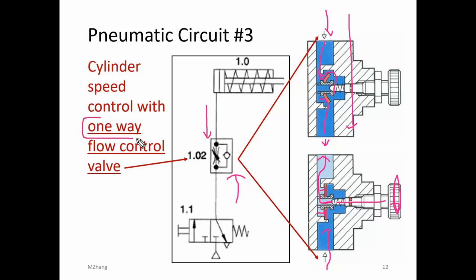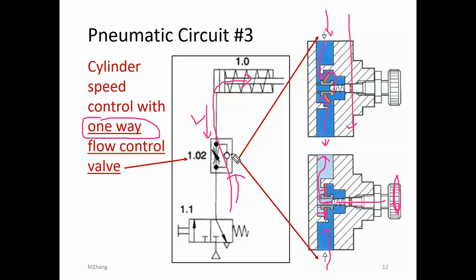That's why it's called one-way flow control — there's no restriction from top to bottom, but from bottom to the top, there will be some restriction. In this way, when you have the air flow from bottom to the top, that means you're trying to extend the cylinder. That will depend on how you adjust the valve. Let's see the operation on the circuit.